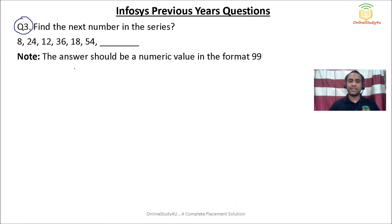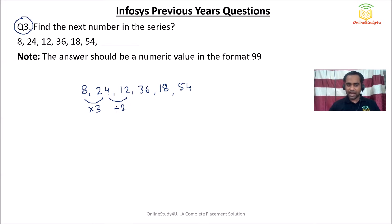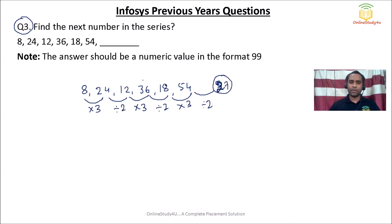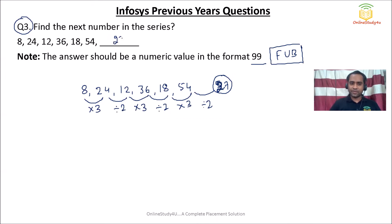Find the next number in this particular series: 8, 24, 12, 36, 18, 54. The pattern I can see is: multiply by 3, then divide by 2. So 8 times 3 is 24; 24 divided by 2 is 12; 12 times 3 is 36; 36 divided by 2 is 18; 18 times 3 is 54; and 54 divided by 2 is 27. In Infosys you get both multiple choice and fill-in-the-blank questions. The answer for this number series question is 27.